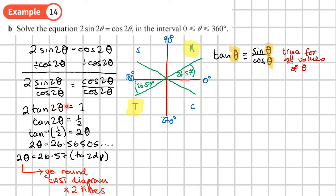If this was 3 here, I'd go around 3 times. If they said half, I'd just go around half a time. If they said a quarter, I'll just go around a quarter of the way around this CAST diagram.